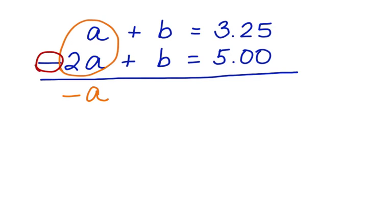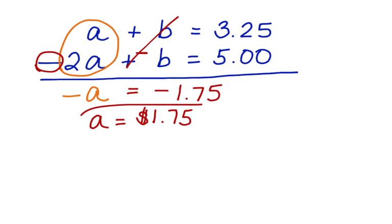We have to also apply this to each term, so it also goes here. So a positive B plus a negative B is going to leave us with no B. These are going to cancel. And then we have $3.25 minus $5, which is going to leave us with negative $1.75. Now, you can't have a negative variable, so if we multiply by a negative on both sides, we are left with A equals $1.75. So one hot dog costs $1.75.